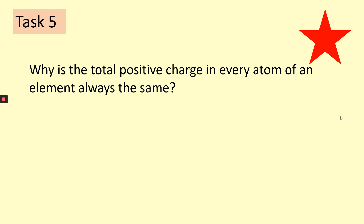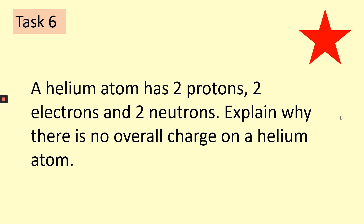Task five: why is the total positive charge in every atom of an element always the same? Final task: a helium atom has two protons, two electrons, and two neutrons. Explain why there is no overall charge on a helium atom.